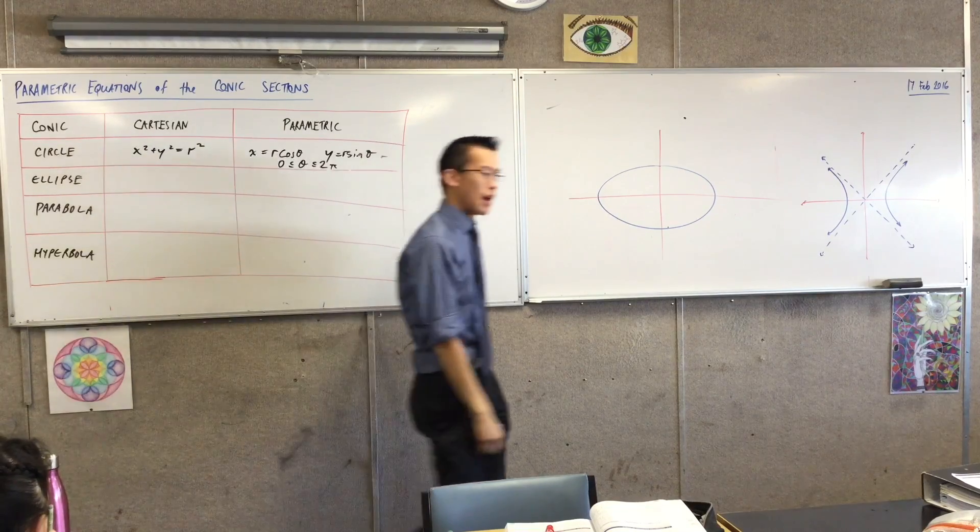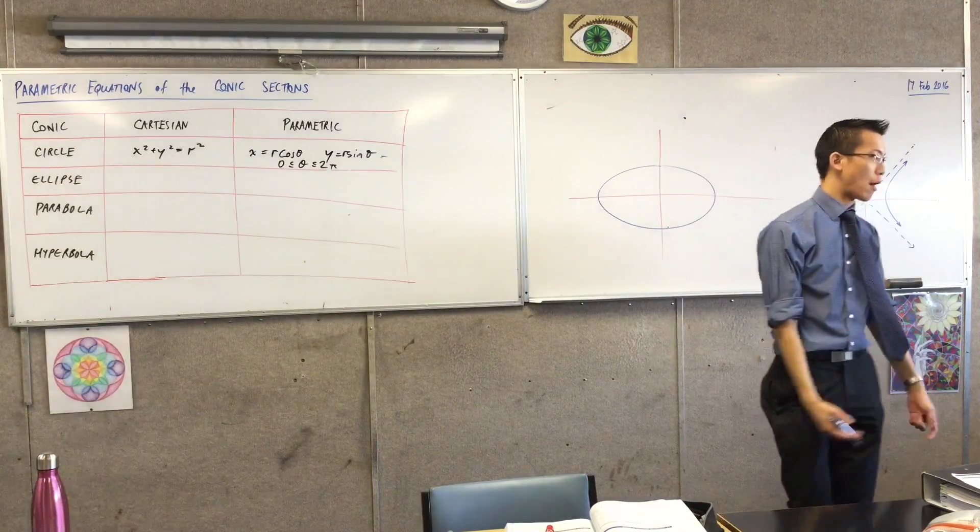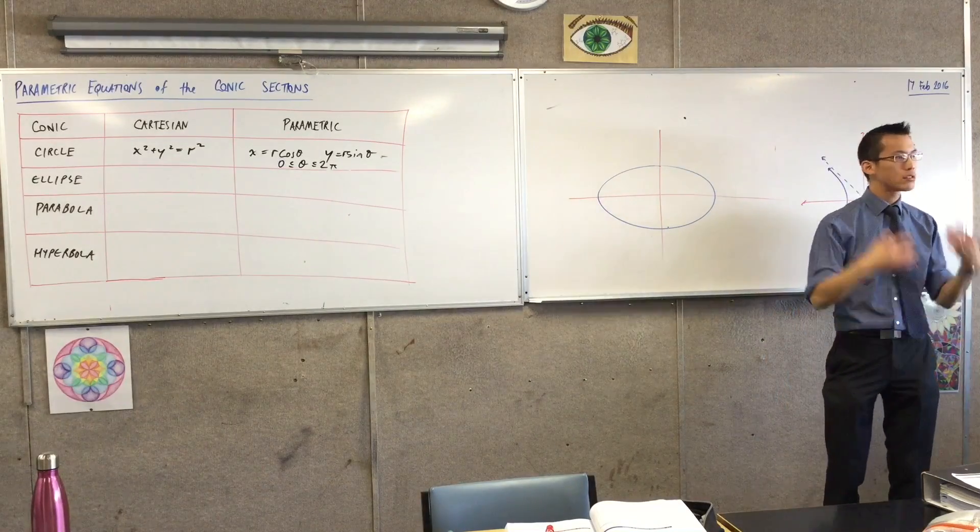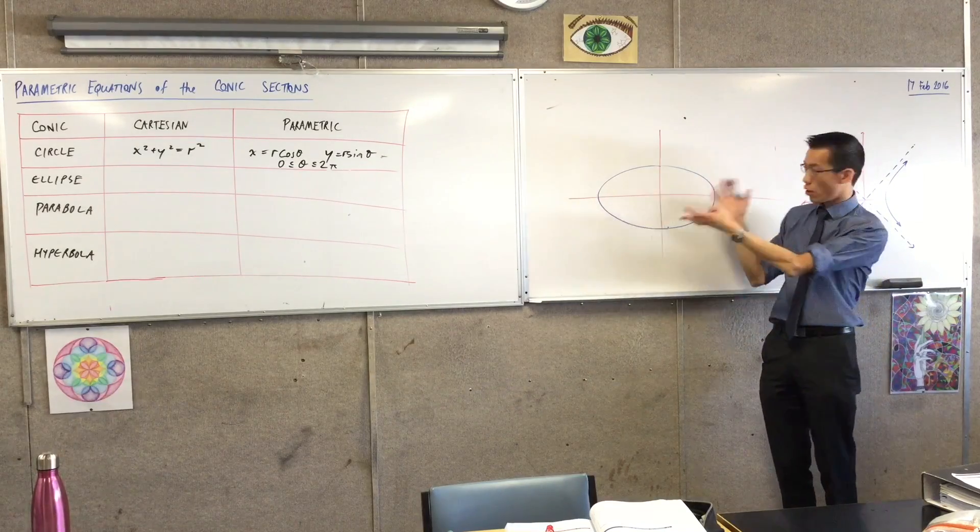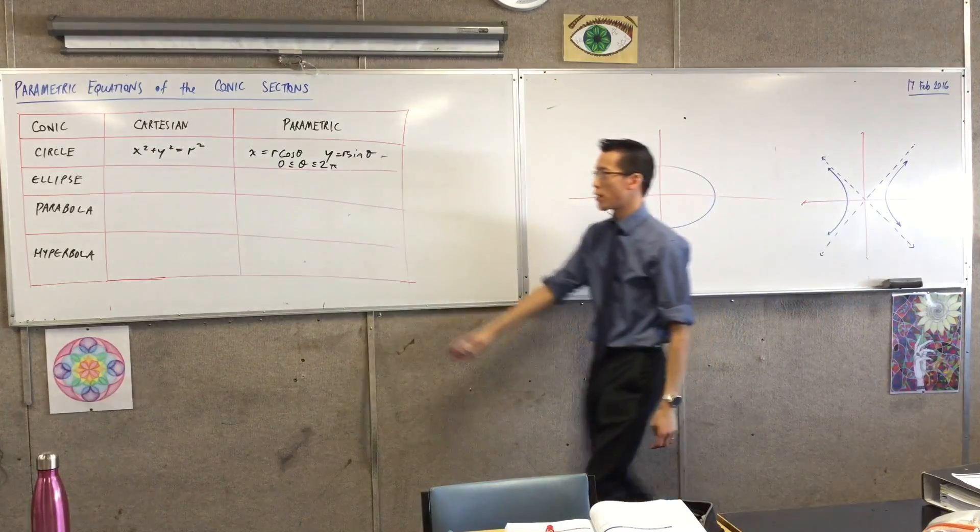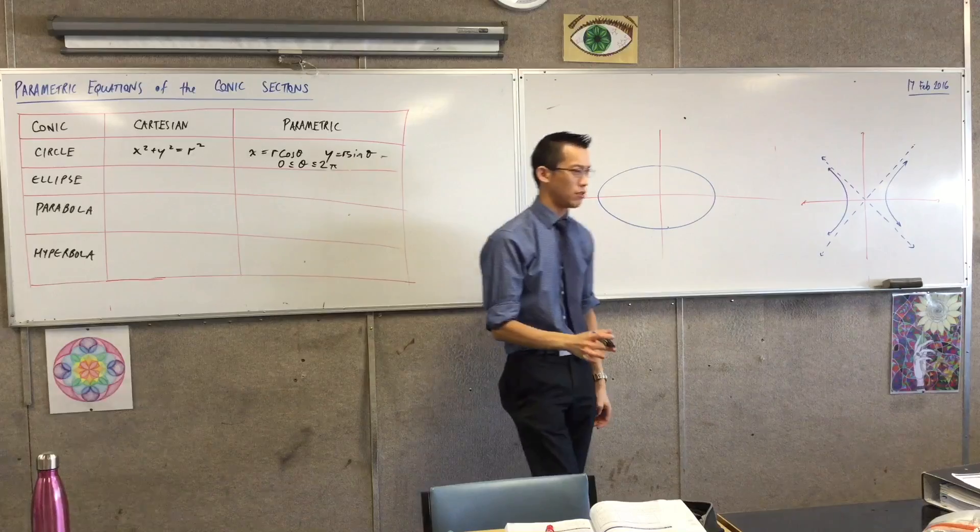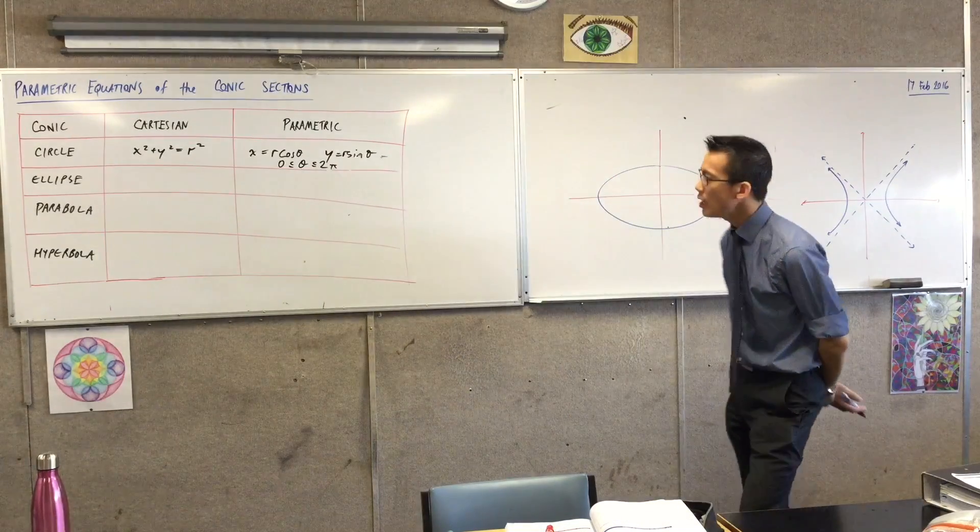I mean, in theory, there's nothing stopping you going past 2 pi, but the whole point is to have one unique defining factor for where you are on your locus. So therefore, if I restrict it from 0 to 2 pi, everything is unique, uniquely different.